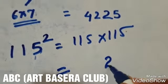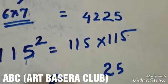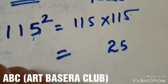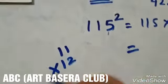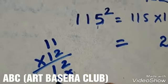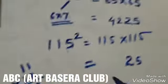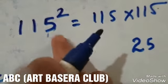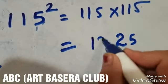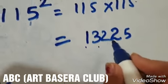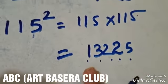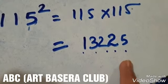What we will do? We will simply write 25. Then we will multiply 11 into 12. 11 into 12 is 132. So the answer of 115 whole squared is 13225.